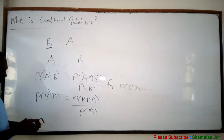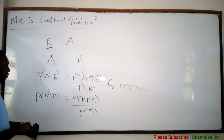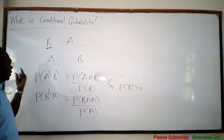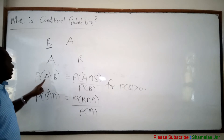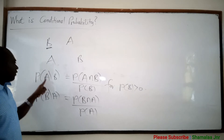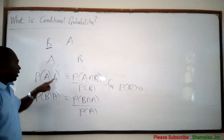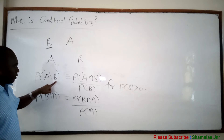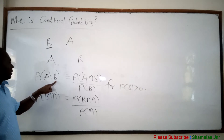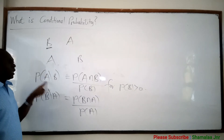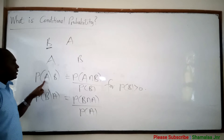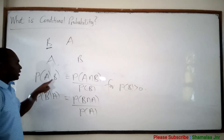Now viewers, let me explain to you. The probability of event A given that event B has already happened. For example, the probability that it rained tonight given that it rained yesterday.